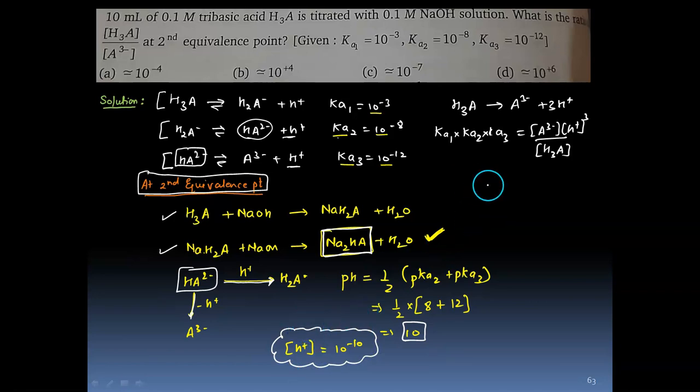Now we are supposed to find the value of H3A to A³⁻. So we use this equation. [H3A]/[A³⁻] will be equal to [H⁺]³, so 10⁻¹⁰ whole cube is 10⁻³⁰.